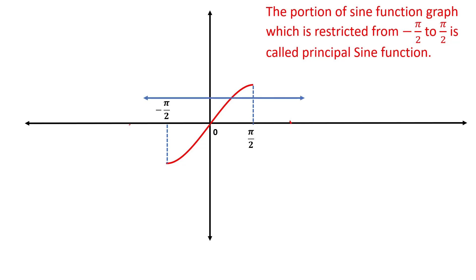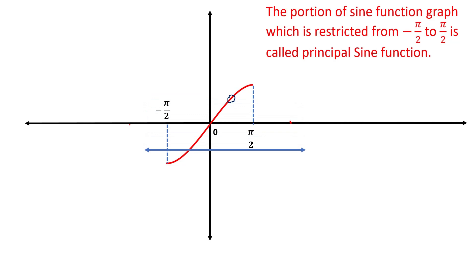We draw a horizontal line. Here we see that the horizontal line cuts the graph of the principal sine function in only 1 point. So the principal sine function is bijective. We can move the horizontal line anywhere in the graph but it still intersects the graph at only 1 point. So from -π/2 to +π/2, the graph of the sine function — called the principal sine function — is bijective.